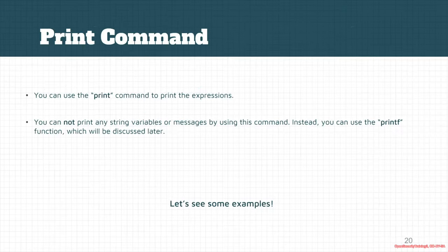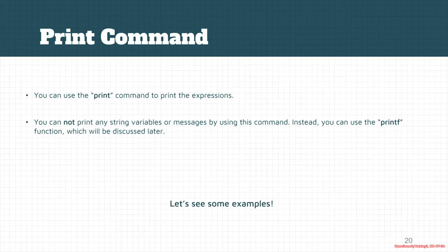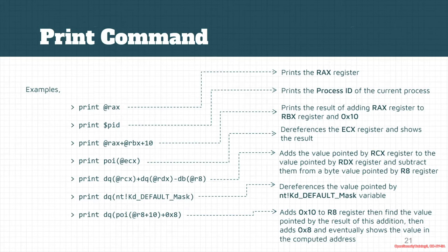Now let's see how to print values in HyperDbg's script engine. The 'print' command evaluates and prints expressions, though it's not designed to show string messages. To show messages, use the 'printf' function. The print command and printf are similar — you put parentheses around your expression.